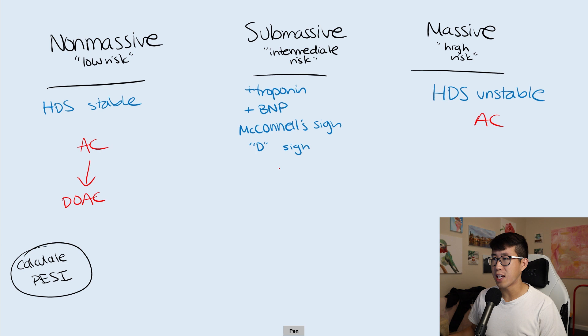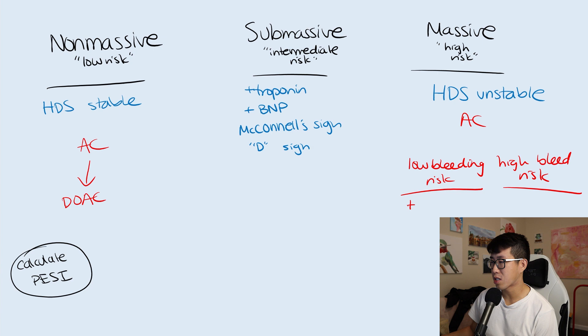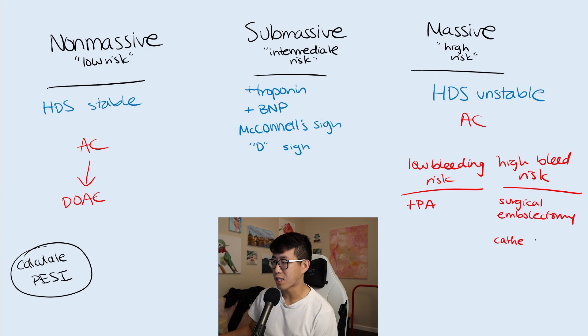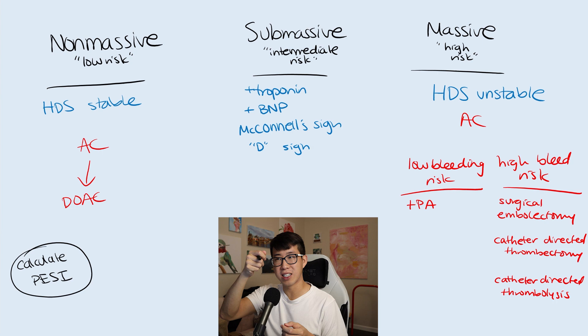If they are a low risk submassive PE, they could probably do anticoagulation and get a DOAC as well. But where it becomes really interesting is massive PEs where the patient is hemodynamically unstable because this is something we need to intervene on immediately. This patient is probably going to get systemic TPA, but there's a couple of caveats to this. In addition to anticoagulation, you can have a patient who is low bleeding risk and high bleeding risk. If they're low bleeding risk, you're probably just going to do the systemic TPA. But if they're high bleeding risk, you have a couple of other options: surgical embolectomy, catheter directed thrombectomy.